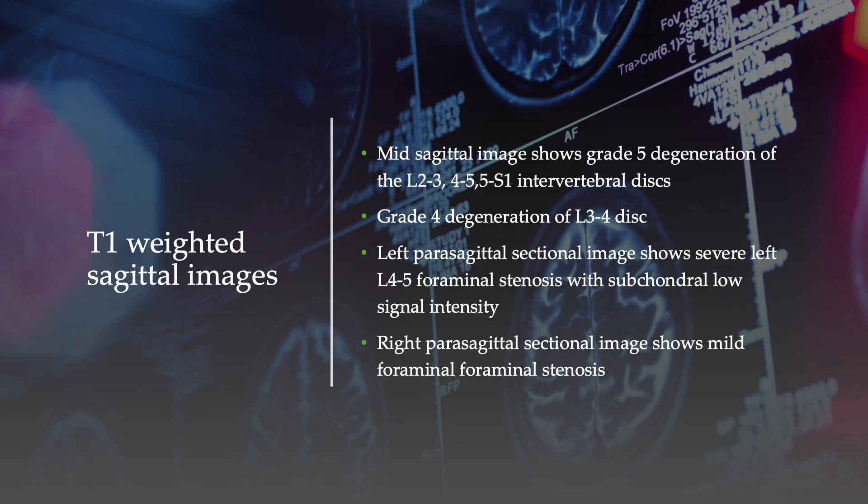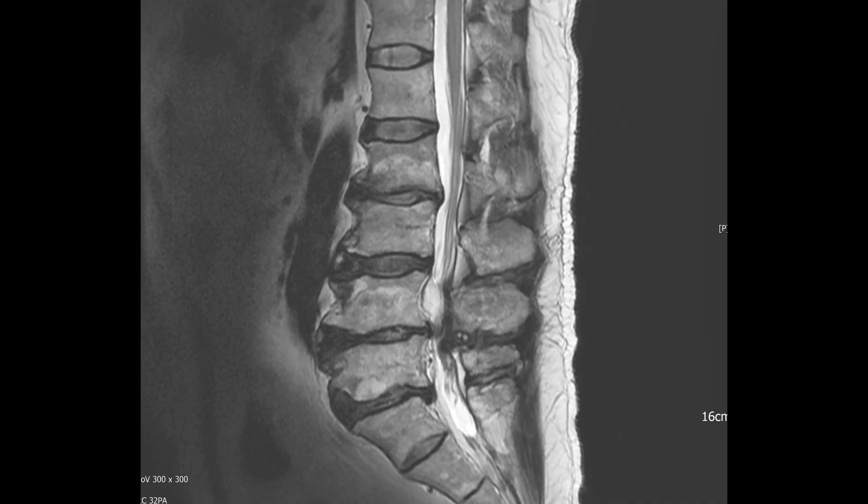T1-weighted sagittal images reveal significant findings. The mid-sagittal image displays advanced degeneration — grade 5 — at the L2-3, L4-5, and L5-S1 intervertebral discs, with grade 4 degeneration noted at the L3-4 disc.